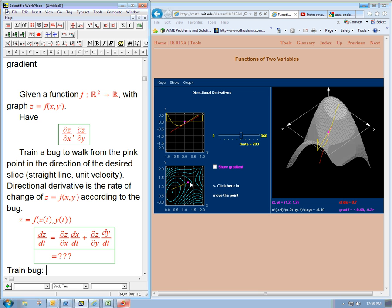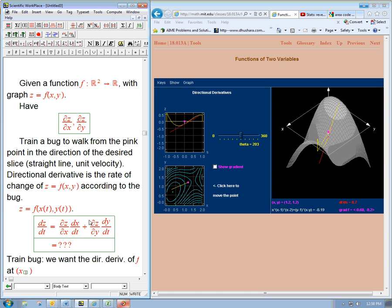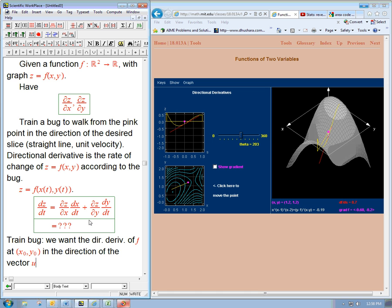So let's just set this up. The thing we need to do is train the bug. I need to give you a particular vector that represents this yellow arrow. So we want the directional derivative of f at x naught, y naught, that's our specific point, in the direction of the vector u. And let's say that's equal to a, b, as a vector.